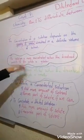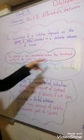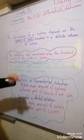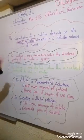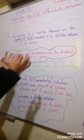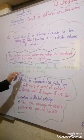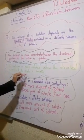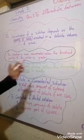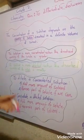A solution is more concentrated when the dissolved quantity of solute is greater. So if we dissolve more solute, the solution will be concentrated, while if we dissolve less solute, the solution will be diluted.